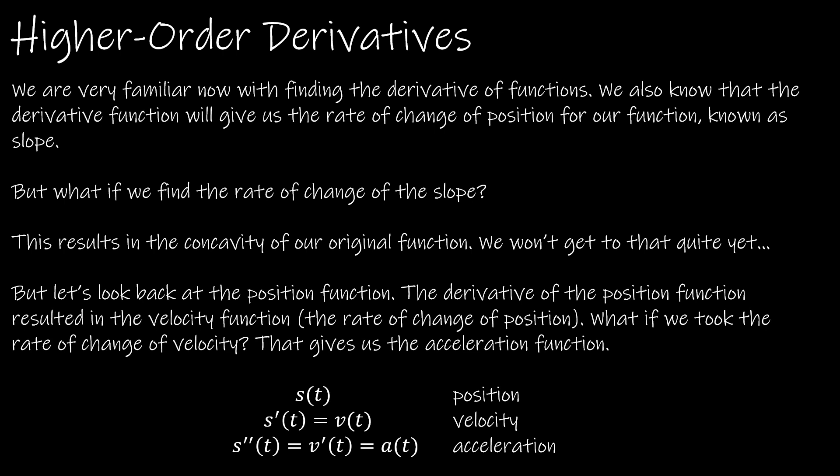Now let's find some higher order derivatives. So I'm going to go back to our position function. And finding the derivative gave us the velocity function, which was the rate of change of position. But what if I found the rate of change of the velocity? Well, the rate of change of our velocity will actually give us acceleration. So how quickly is velocity changing? So s of t is our position function, s prime of t is v of t, or velocity. s double prime, so that's the second derivative of the position function, is actually the derivative of the velocity function, which is the acceleration function.